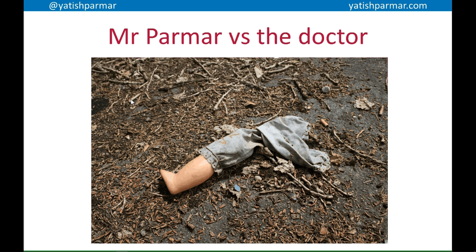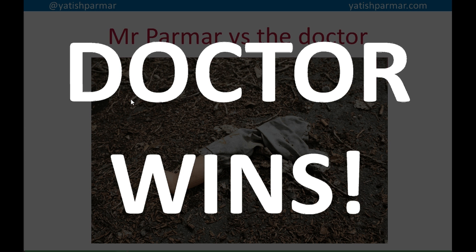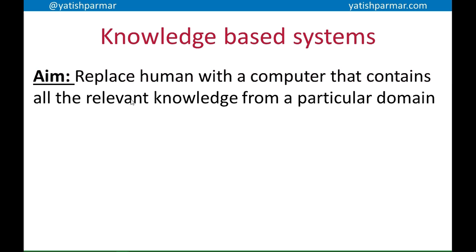Imagine you had a broken leg — the leg of a doll, not a real one. Who would you trust: me or a doctor? Probably the doctor, because they have a large amount of factual knowledge about that particular problem domain. The aim of a knowledge-based system is to replace a human expert with a computer that contains all the relevant knowledge from a domain, so the computer can make decisions about how to solve a problem.